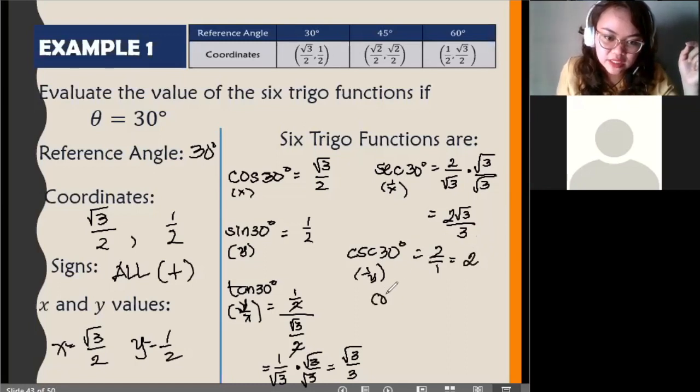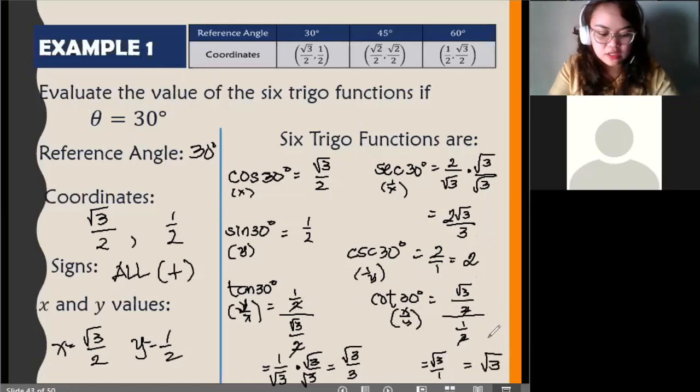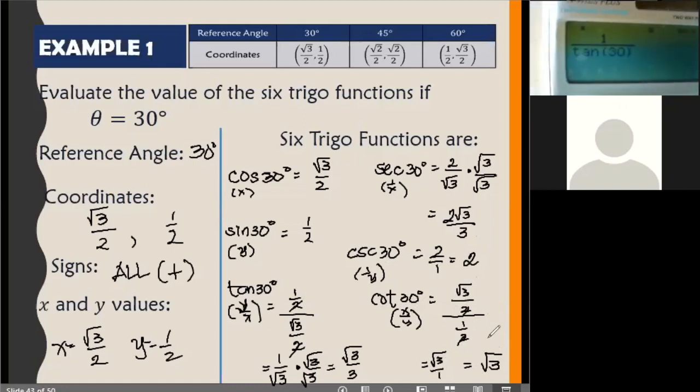And then, last would be the cotangent. Cotangent 30 degrees. You have x over y. So, we'll have square root of 3 over 2, all over 1 half. Cancel, cancel. You're left with square root of 3 over 1 or simply square root of 3. Let's type that in your calculator. Cotangent. So, we will type 1 over tangent 30 and you'll get square root of 3.